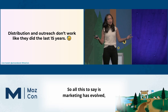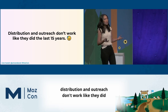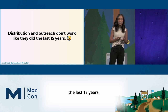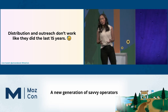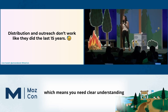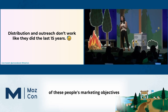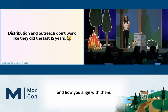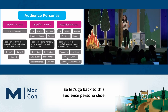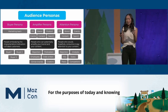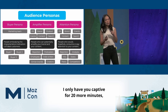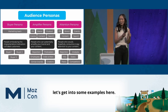All this to say: as marketing has evolved, distribution and outreach don't work like they did the last 15 years. A new generation of savvy operators are running today's web ecosystem, which means you need a clear understanding of these people's marketing objectives and how you align with them. So let's get into some examples, starting with the amplifier persona.